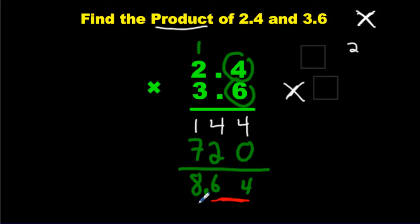We can also use some logic here. And say 2.4 is about 2. 3.6 is about 4. It's very close to 4. And 4 times 2 is about 8. If you would have put the decimal here, you would have gotten 86.4. That makes no sense. Because 4 times 2 is not 86. The only logical place to put the decimal would be right here. Because that gets us 8.64, which is about 8.